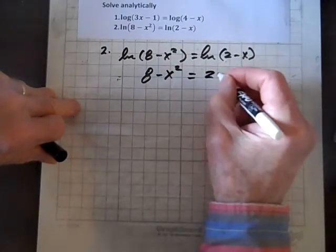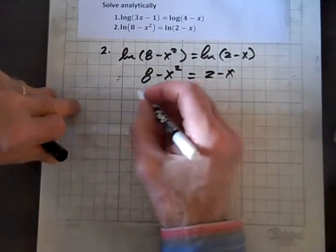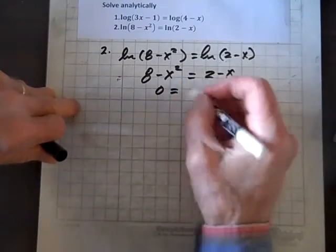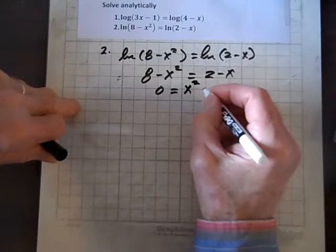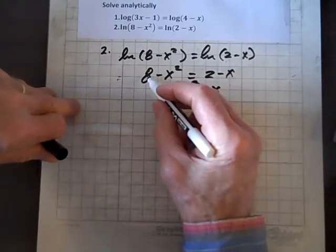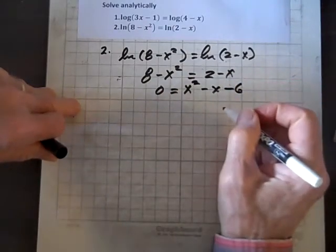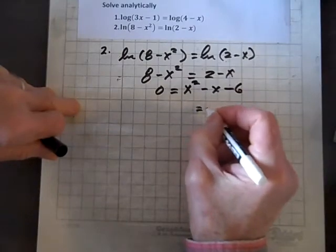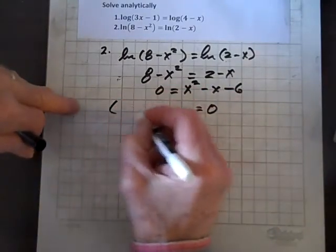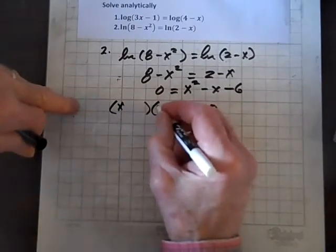8 minus x squared equals 2 minus x, and now let's solve for x. So let's see. I'll get 0 on one side, everything else on the other. So we'll add x squared to both sides. I get x squared minus x, and we'll subtract 8 from both sides, and 2 minus 8 is minus 6. So I'm going to put that 0 over on this side, and factor this.